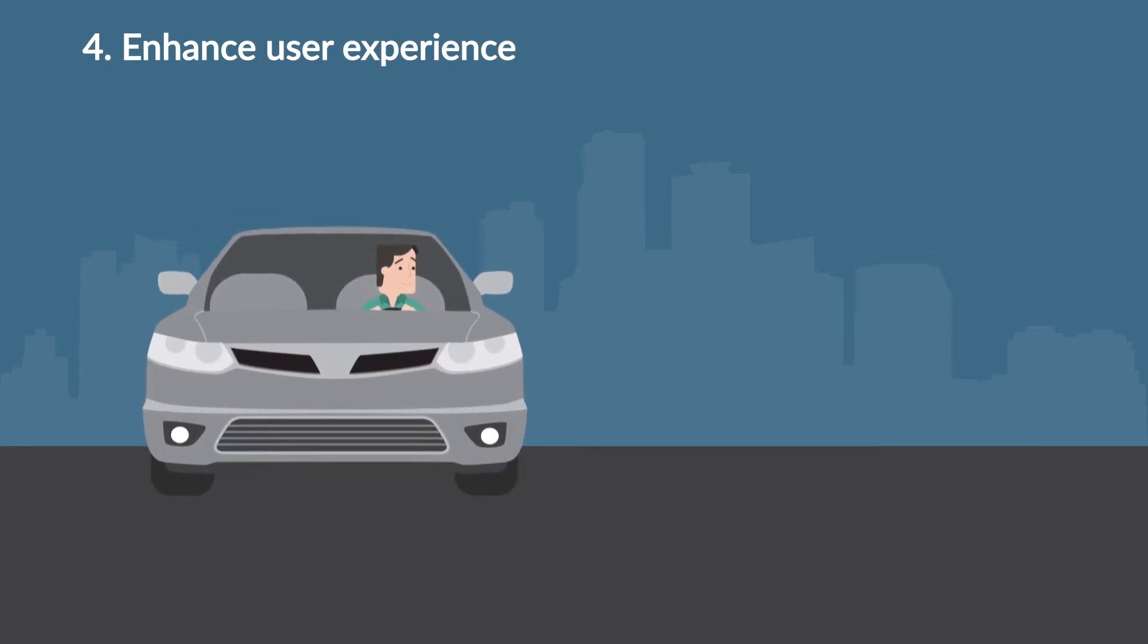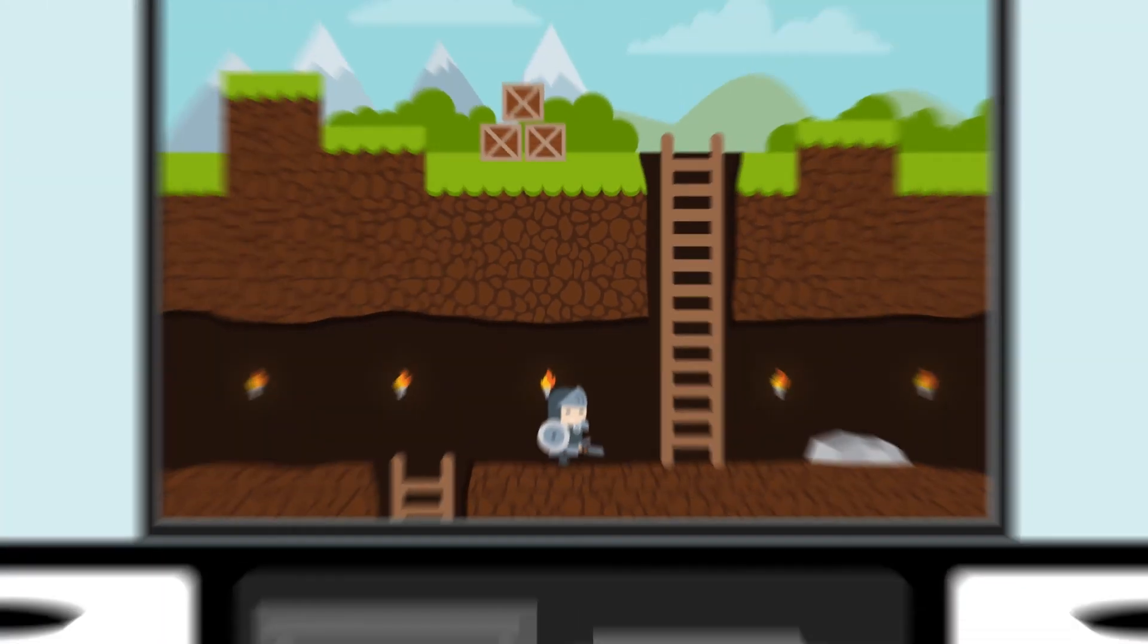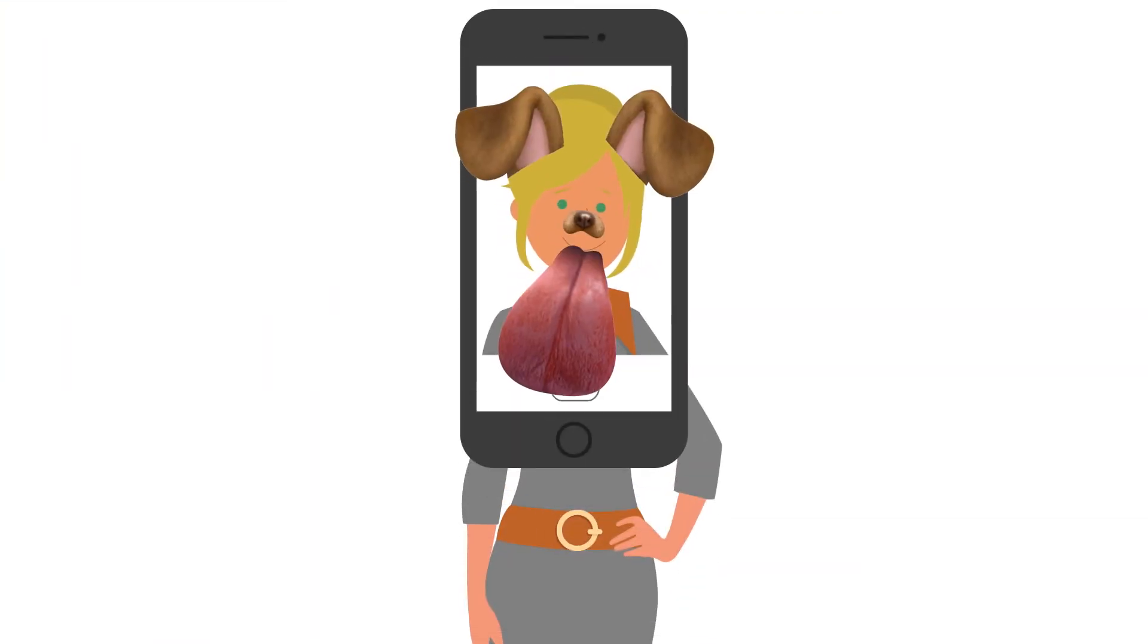And of course, AI algorithms are behind lots of things we use and love every day, like Uber, Shazam, video games, and most importantly, the Snapchat puppy filters.